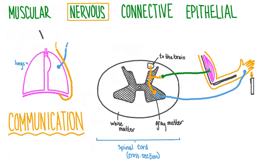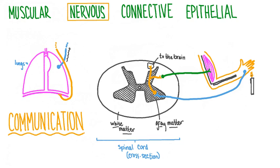Nervous tissue's main function is communication. It allows communication between parts of the body and between the body and the outside world, allowing us to sense our surroundings and react to changes. Nervous tissue is the primary tissue of the nervous system. In the brain and spinal cord it can be divided into gray matter, adapted for information processing, and white matter, adapted for the transmission of information. We have nervous tissue in almost every organ in our body.